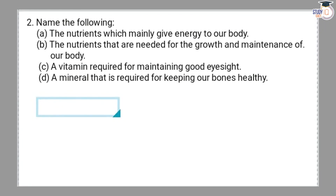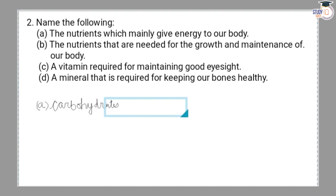Hello students, this is question number 2 from chapter 2, class 6 NCERT: Name the following. A - The nutrients which mainly give energy to our body. So we get energy from Carbohydrates. Answer: Carbohydrates. Examples of foods we get carbohydrates from are roti, rice, butter, sugar, and potatoes.